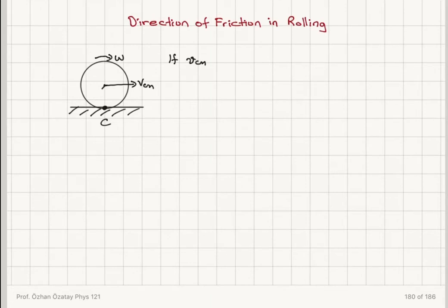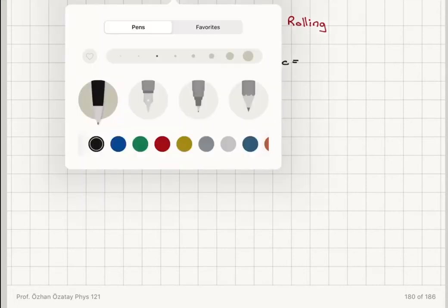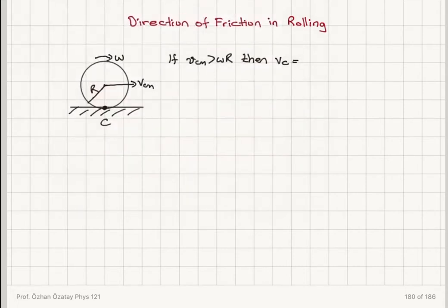If the velocity of the center of mass is greater than ωR — normally for rolling without slipping this should be equal to ωR — but now the velocity of the center of mass is greater than ωR. Then what can we say about the velocity of the contact point?